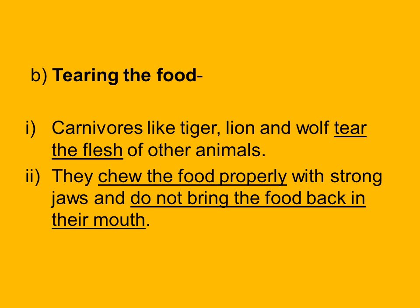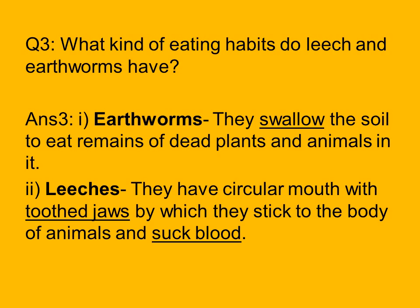The next question is: what kind of eating habits do leech and earthworms have? Earthworms swallow the soil to eat remains of dead plants and animals in it. They have a very hard and pointed mouth with which they burrow into the soil and swallow it containing remains of dead plants and animals, which then passes into their small intestines and is converted into nutrients passed into the earth.